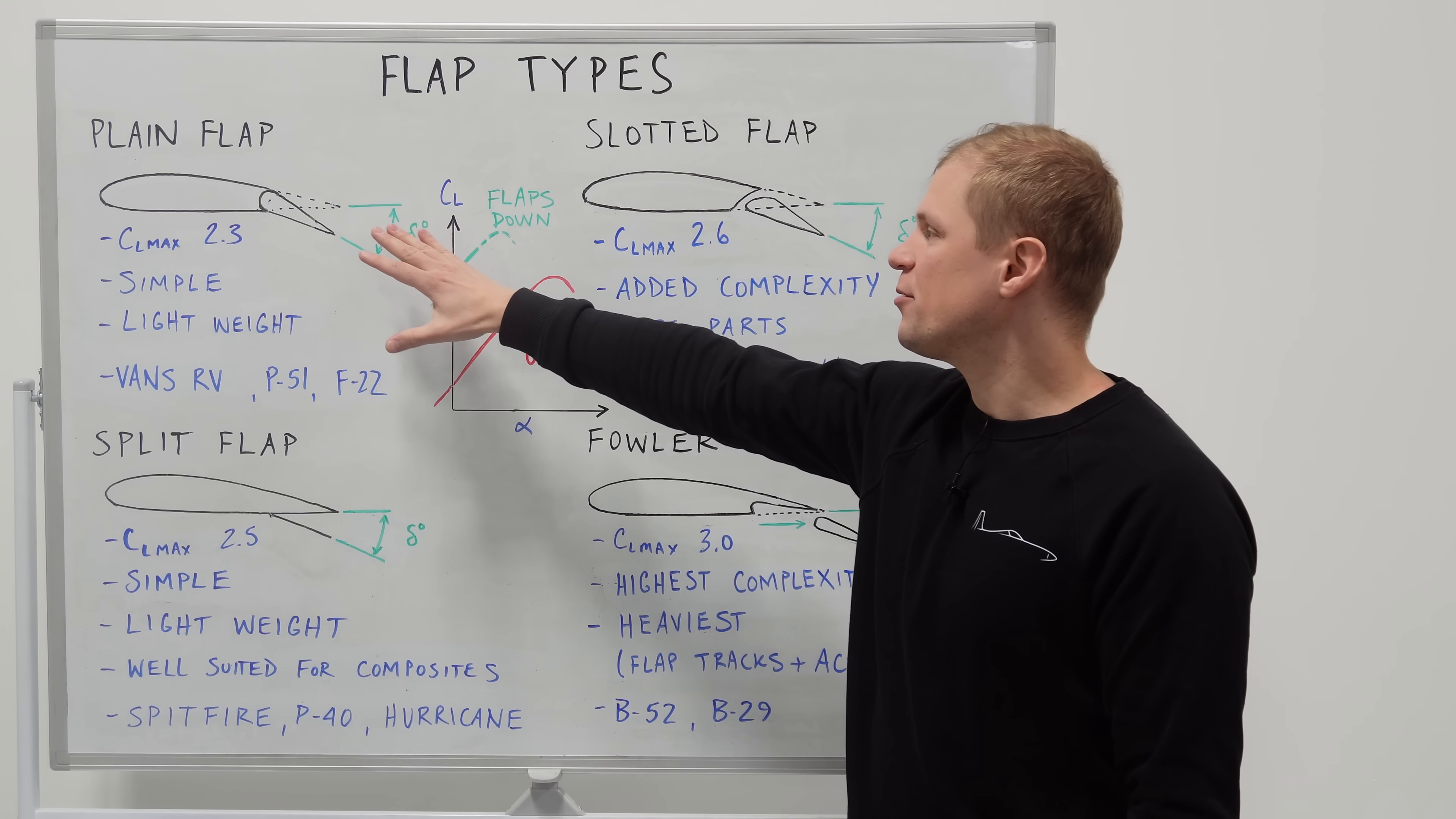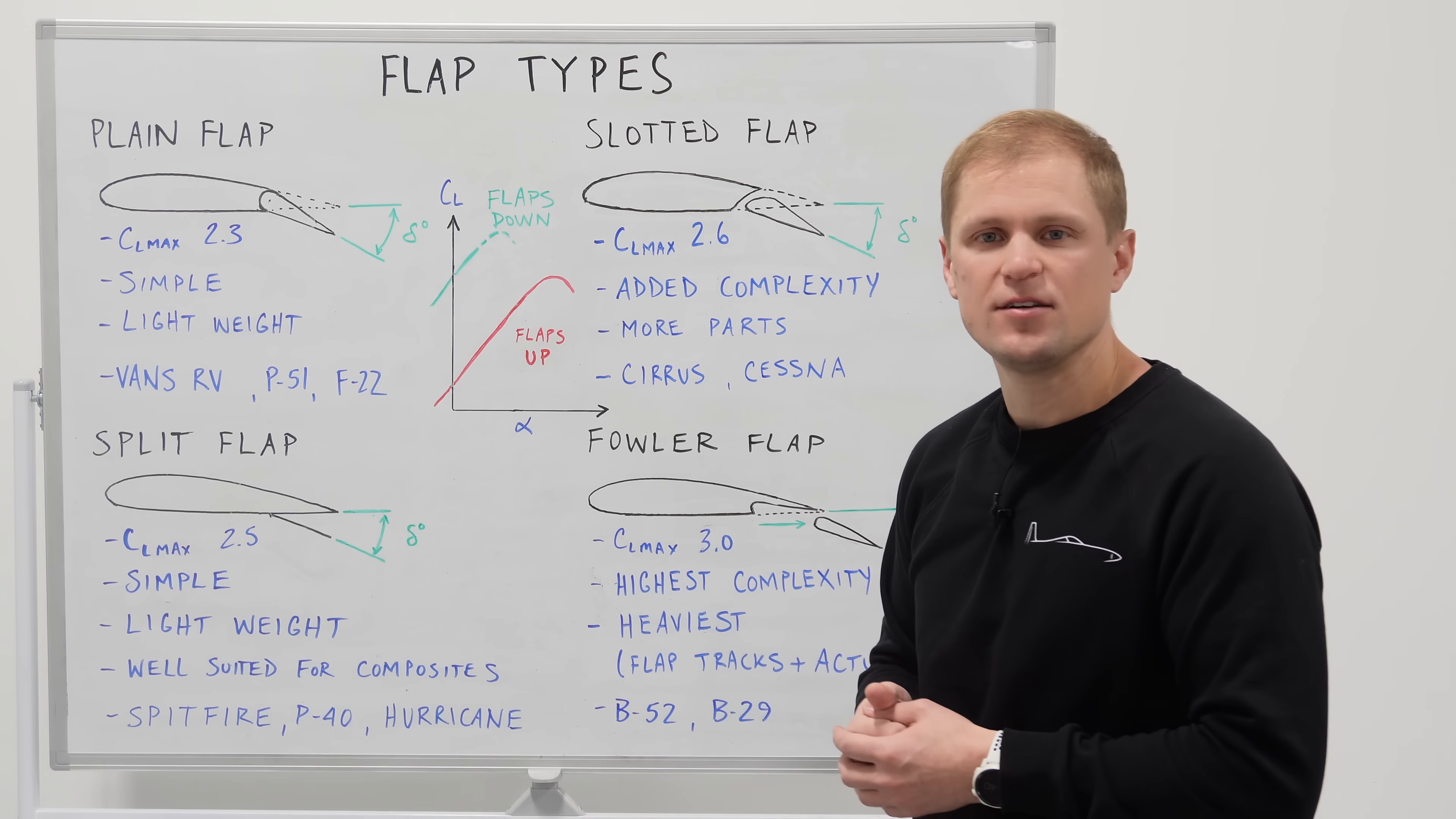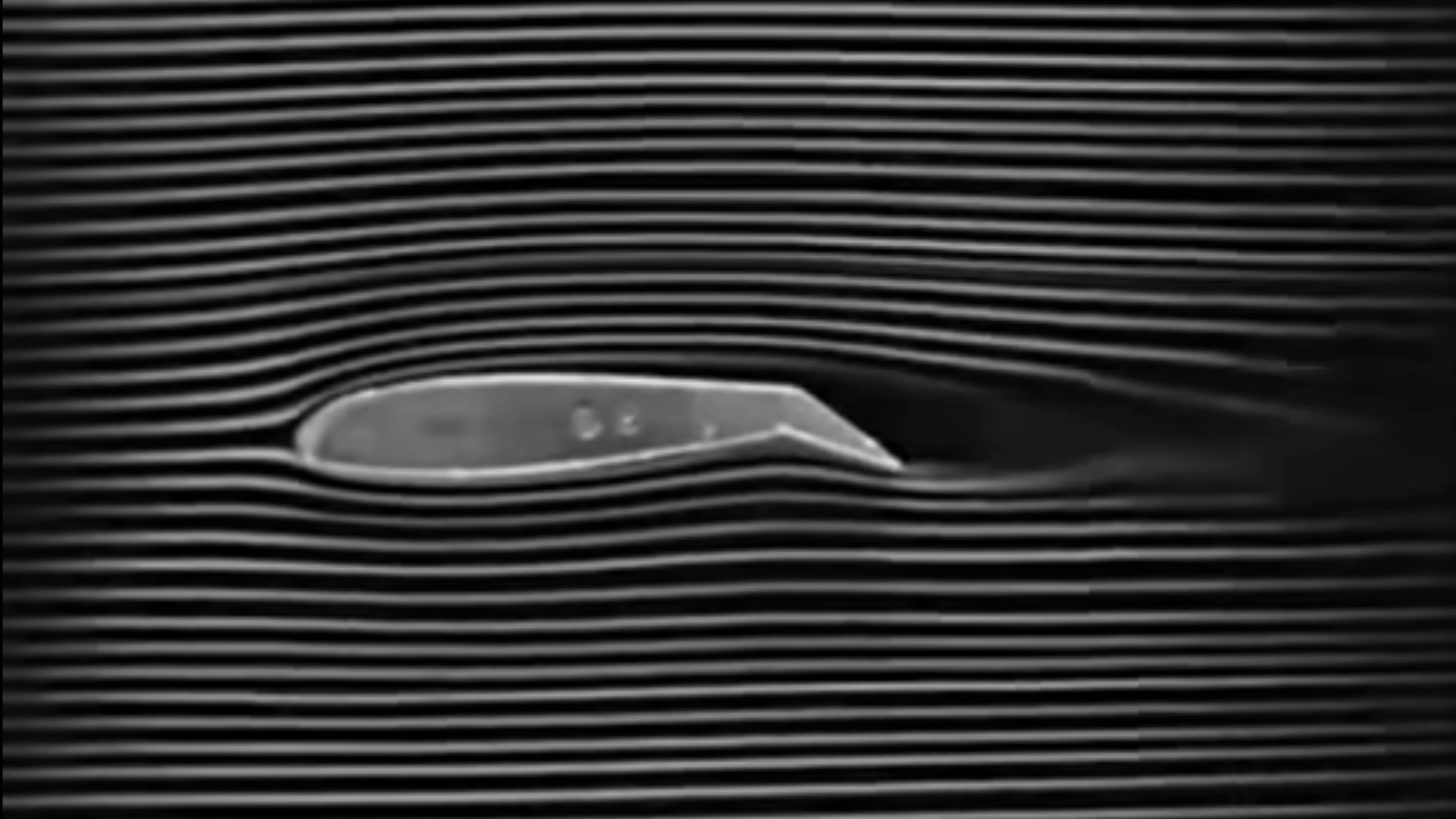The maximum lift coefficient that we get with the plain flap is somewhat limited by the geometry at the hinge line. So the air flowing over the top of the wing skin can stay attached and follow the contour for small flap deflections anything less than about 15 or 20 degrees. But as we get into higher flap deflections past 20 degrees the flow starts to separate and it can't follow that contour on the upper surface of the flap. So that separation somewhat limits the maximum lift coefficient that we can achieve with the plain flap.